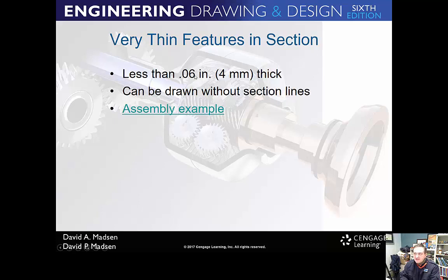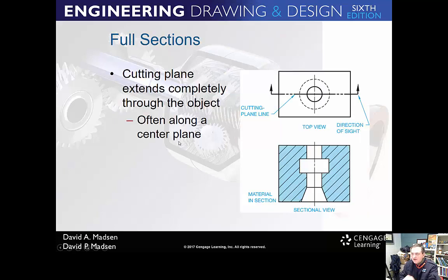Things that are really thin, like a gasket or a washer, you're not going to section those either — they can be drawn without section lines. A full section is where you cut all the way across. Notice the arrows are pointing away from the section view. I'd like things to be horizontal when you draw them — it looks better on the sheet.